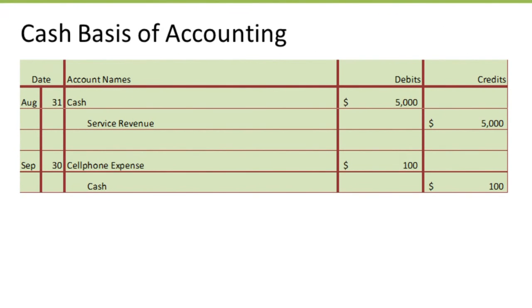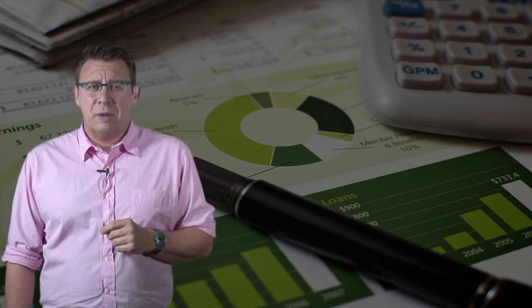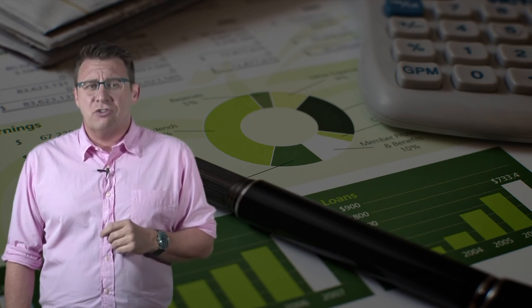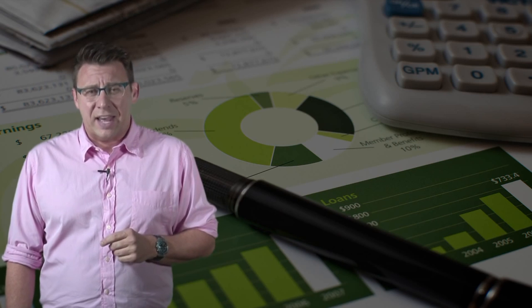Under the Cash Basis of Accounting, the revenue and expense are all over the place. The revenue of $5,000 would be recorded in August, and the expense of $100 would be recorded in September. Basically, it would look like you did absolutely nothing during the month of July. Your investors and creditors have less valuable information, because it doesn't reflect what you actually did during the month of July. And that concludes this short video on the differences between accrual accounting and the Cash Basis of Accounting.